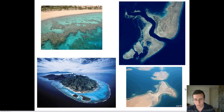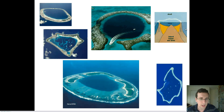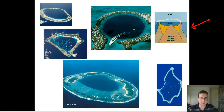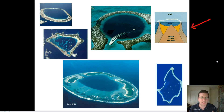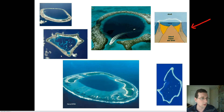Another type is atolls. Atolls grow around islands that have not breached the surface — we're talking about volcanic islands. The reef grows around the island, creating what looks like a rim. The island is actually below sea level, like a very large seamount that hasn't breached the surface. This can also happen around the edge of a guyot. If it grows large enough, it can form an island made of coral — like the Bikini Atoll and Bora Bora and many Pacific islands.